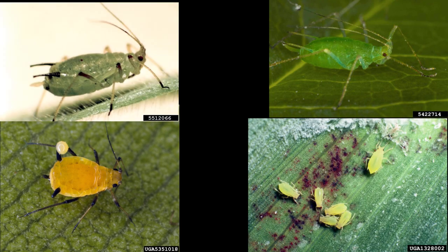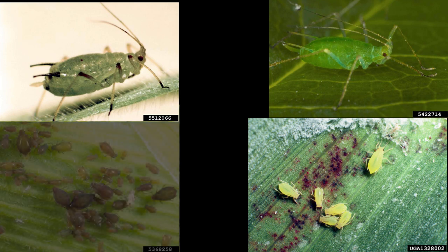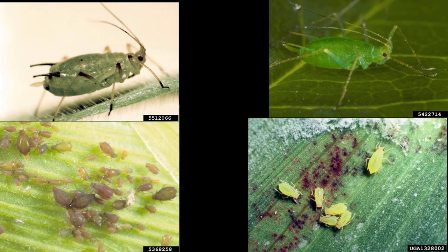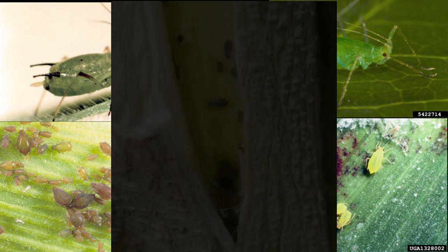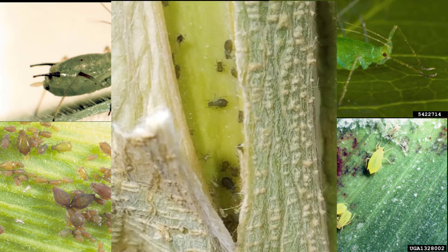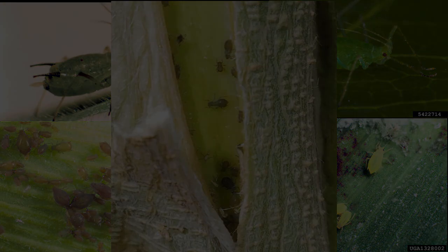Also infecting the English grain aphid Cidobion avenae, the corn leaf aphid Rhopalcyphum midas, and most important to both grain and cannabis growers everywhere, the rice fruit aphid Rhopalcyphum rufiabdominale.